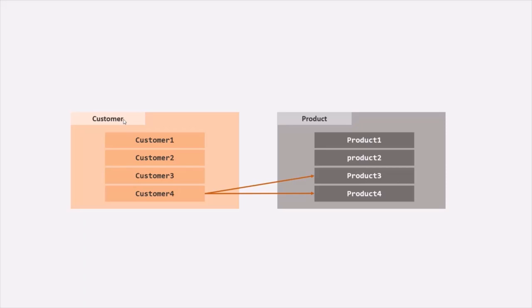In simple terms, we want to relate our customer collection with the product collection. The question is, how do we store related data in MongoDB? In MongoDB, we have two ways to specify a relation: using embedded documents and by using references.